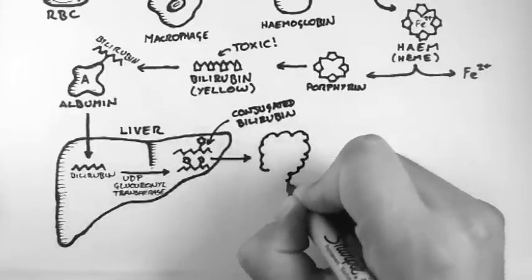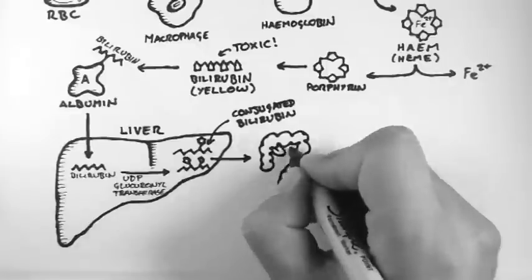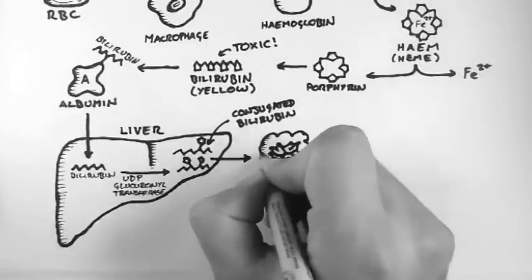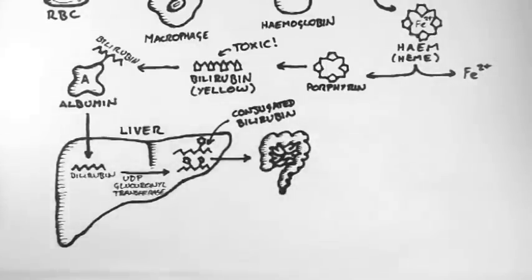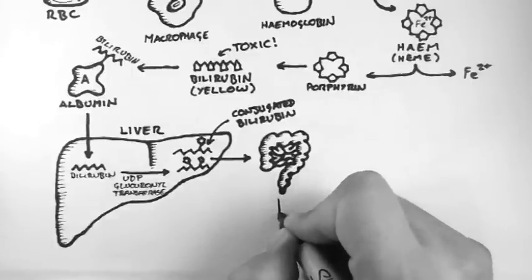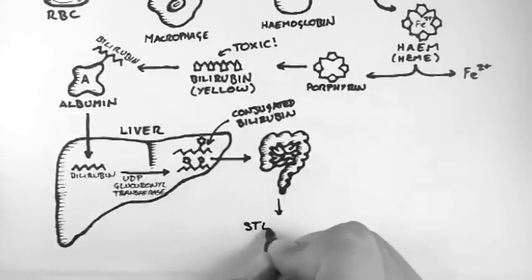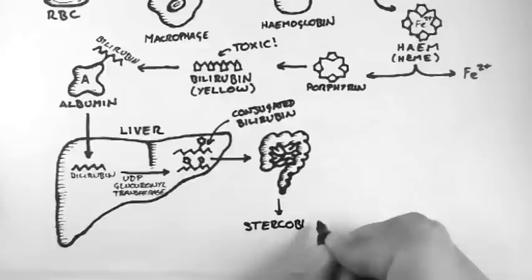The conjugated bilirubin then gets excreted in the bile into the intestines. It then gets acted upon by the bacteria in the intestines to produce stercobilinogen.